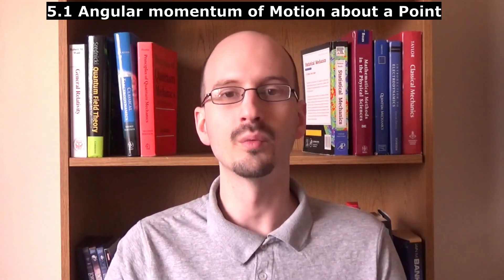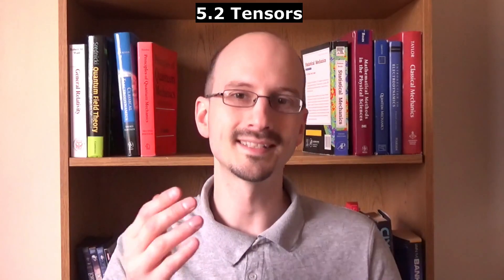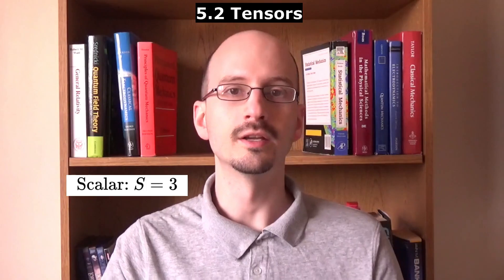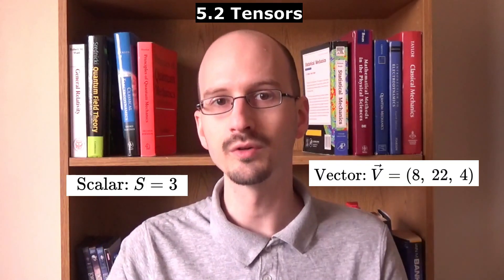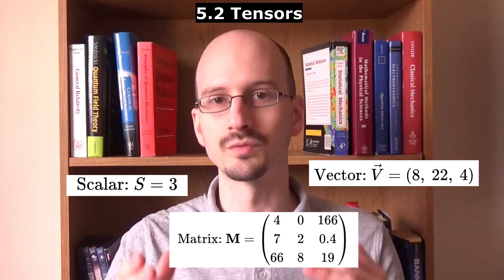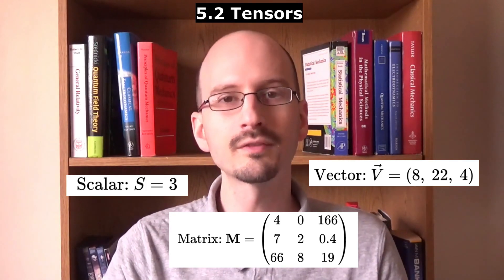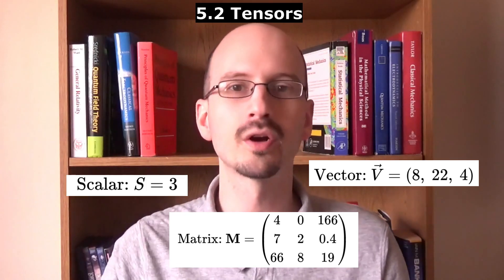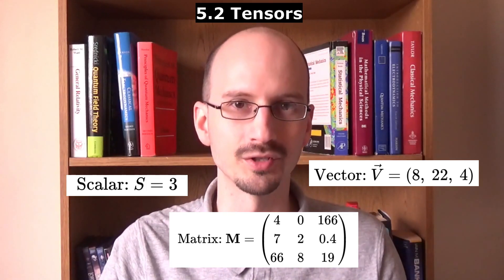Section 5.2 talks about a new math term which is very important for physics called tensors. You've heard of a scalar, which is just a number. You've heard of a vector, which is a row of numbers. And you've heard of a matrix, which is a rectangle of numbers. But mathematicians have extended this to an arbitrary number of dimensions, and they call this idea a tensor.